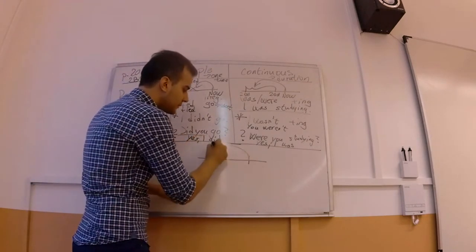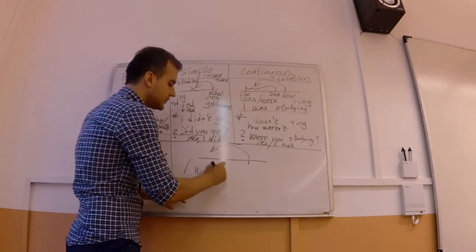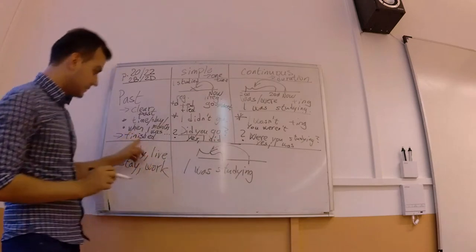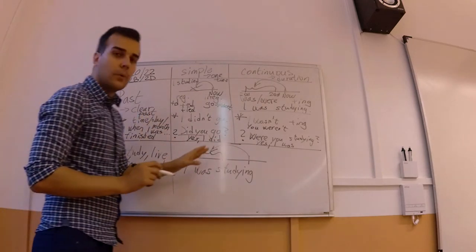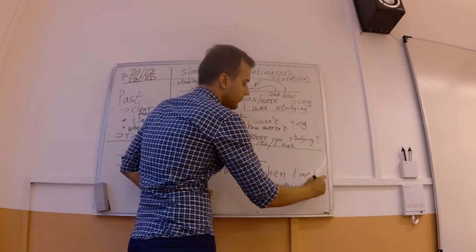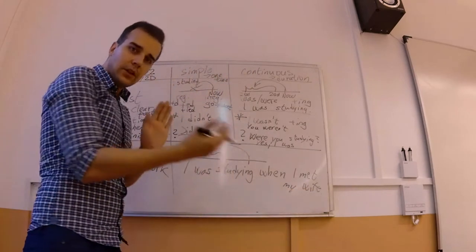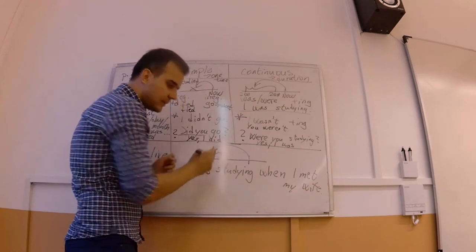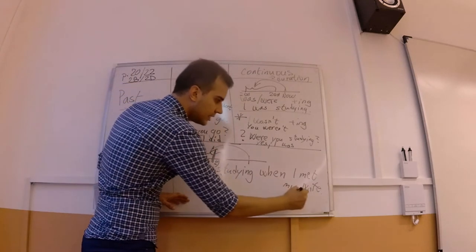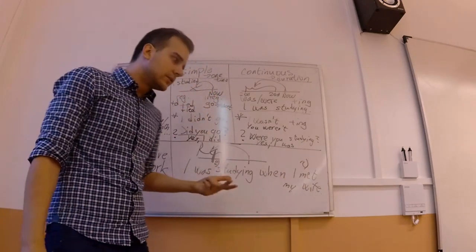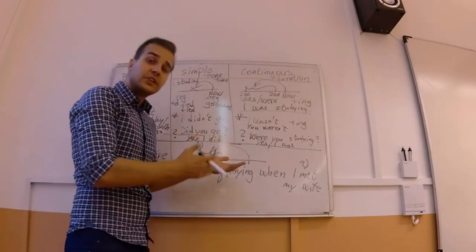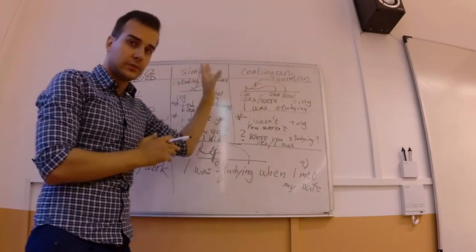Now I can actually combine these two tenses in one sentence — past simple and past continuous. For example: 'I was studying when I met my wife.' I was in the middle of the process of studying — action one — and then something happened while I was in that process. Meeting someone is a one-time action, so I say 'I met my wife.' It's an action that entered another action that had some duration.